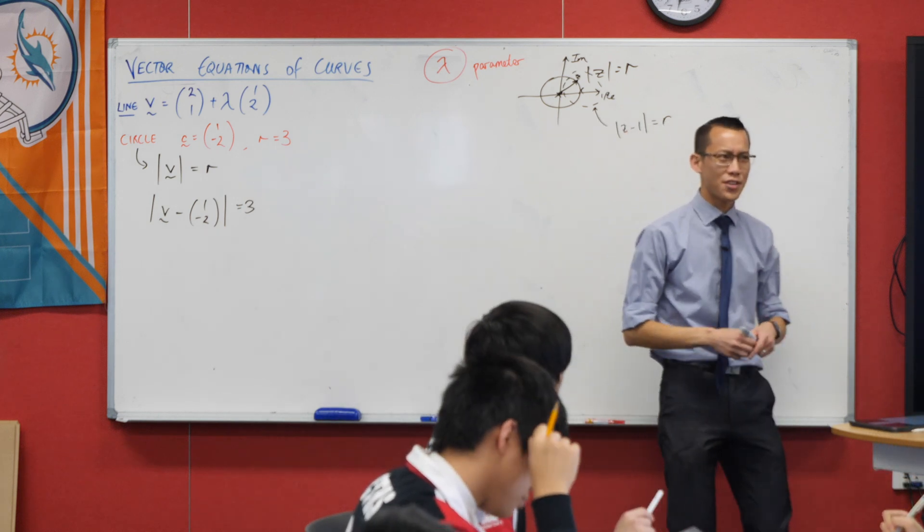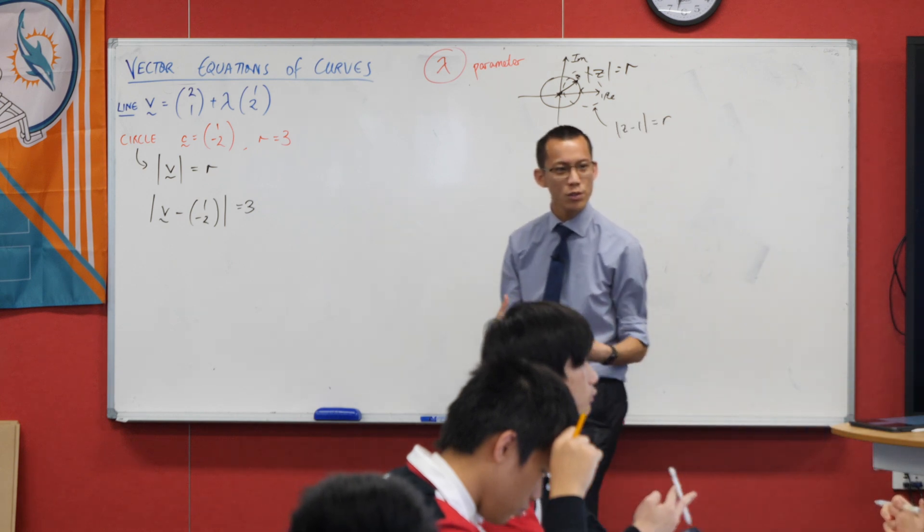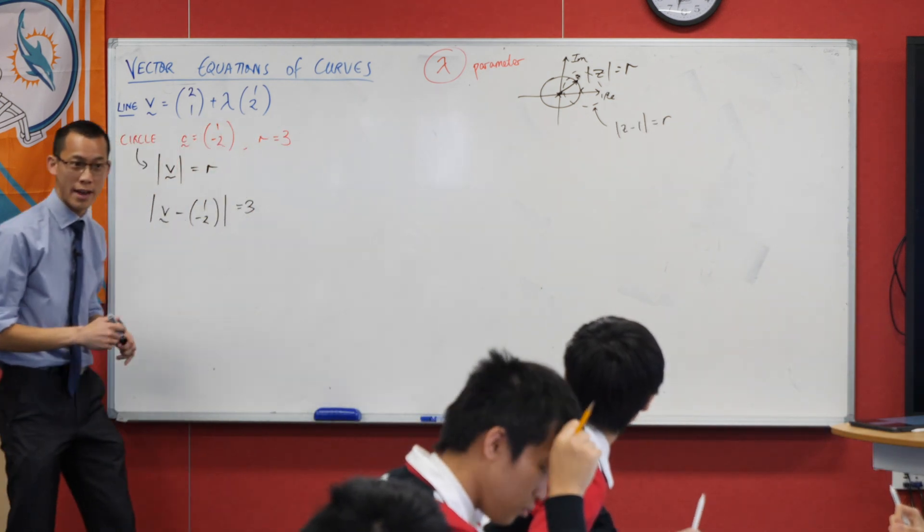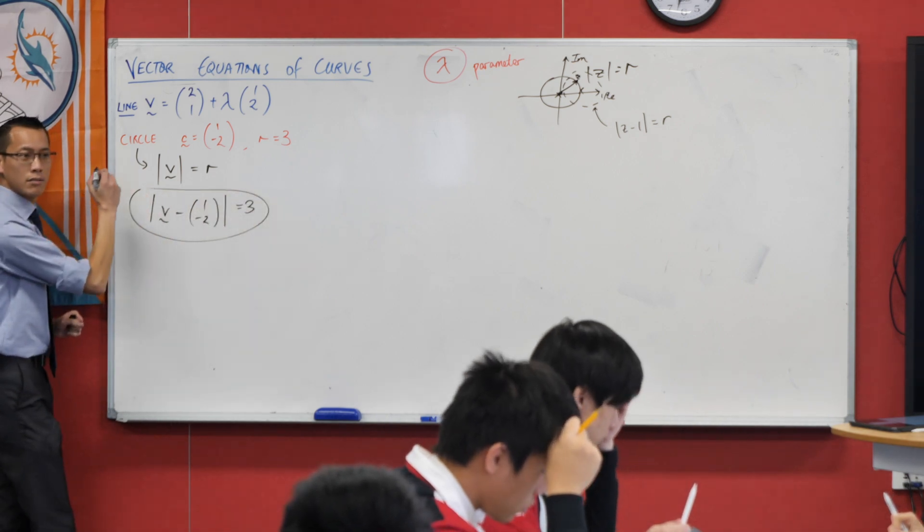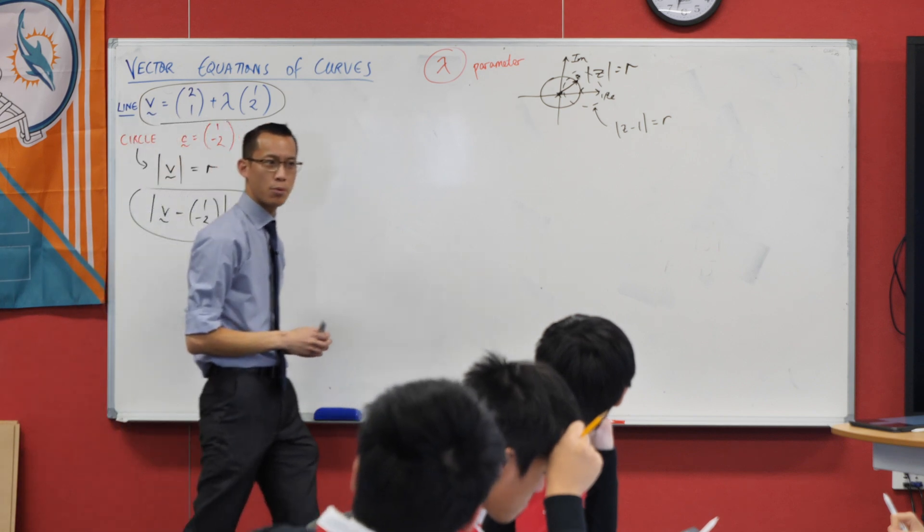So now I have the vector equation of a circle, and I can combine that. If you want to find points of intersection, P and Q, I've got a vector equation of a circle here, and a vector equation of a line here. How do we normally find points of intersection?